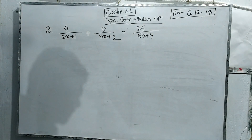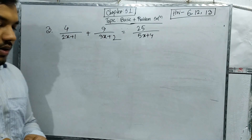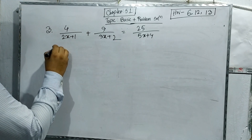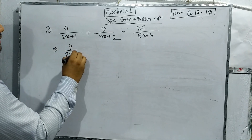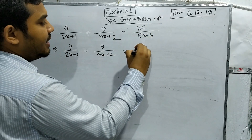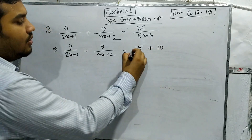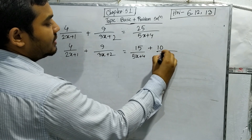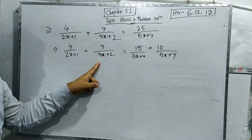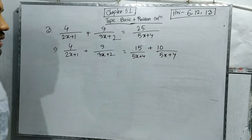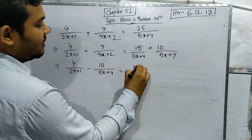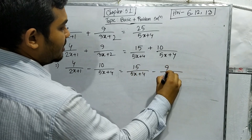To solve this type of problem, we observe that 25 can be written as 15 plus 10. So the right side becomes 15/(5x+4) + 10/(5x+4). Now, 4 and 10 are even integers, and 9 and 15 are odd integers. We take even and odd terms to one side each, giving: 4/(2x+1) minus 10/(5x+4) equals 15/(5x+4) minus 9/(3x+2). Then we proceed with LCM.